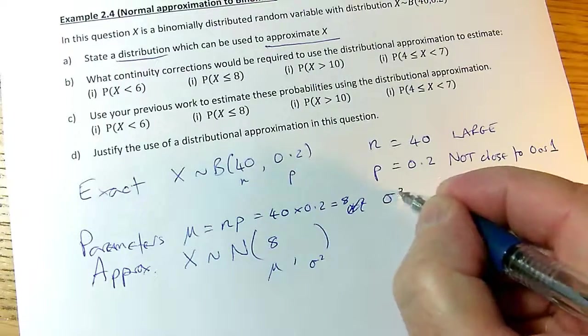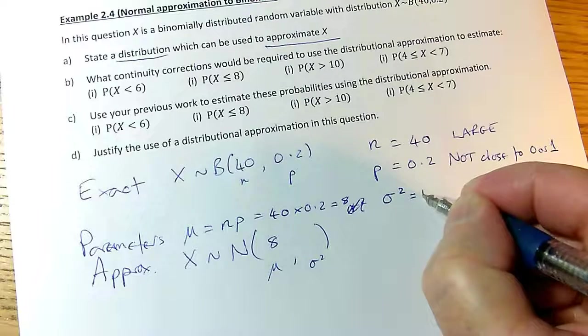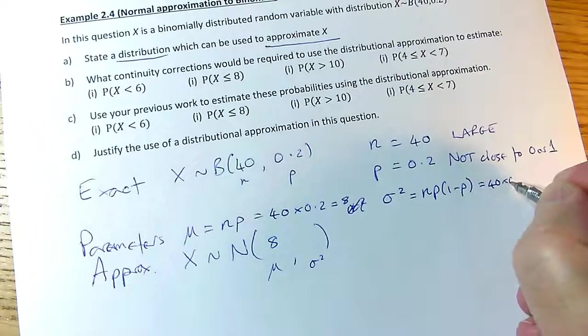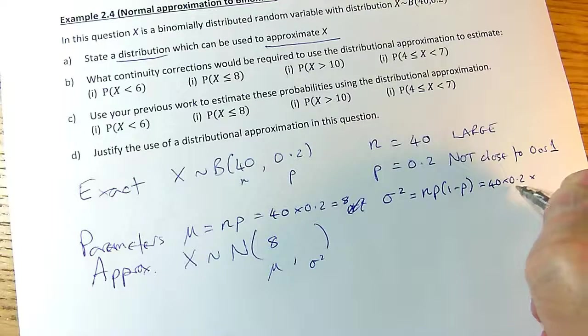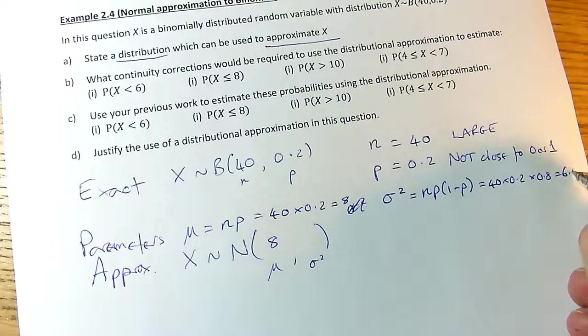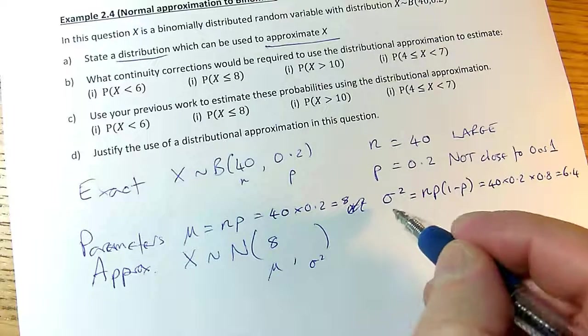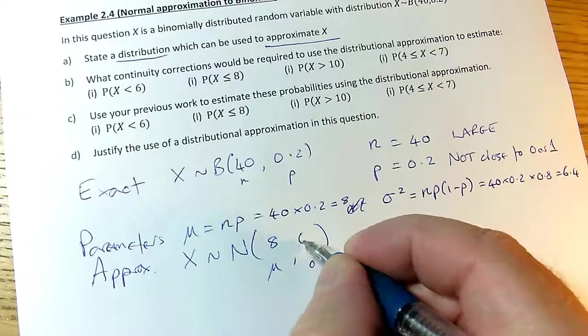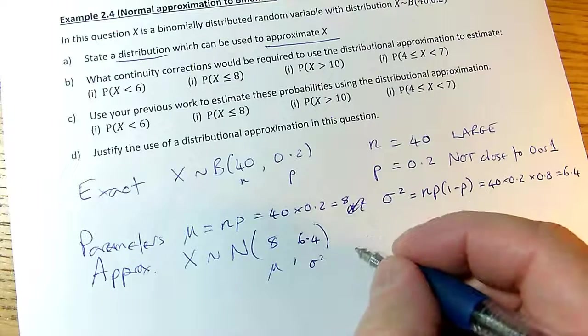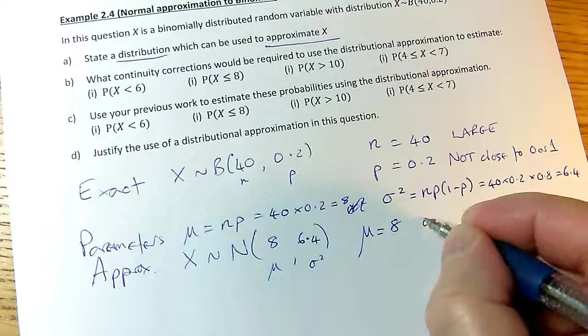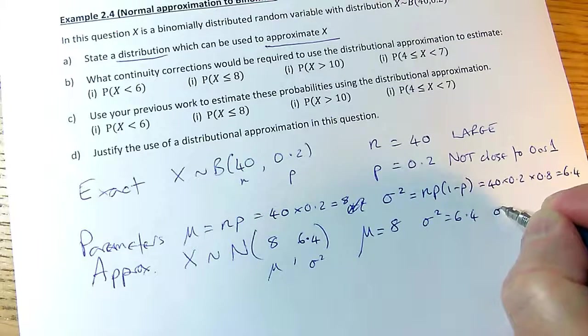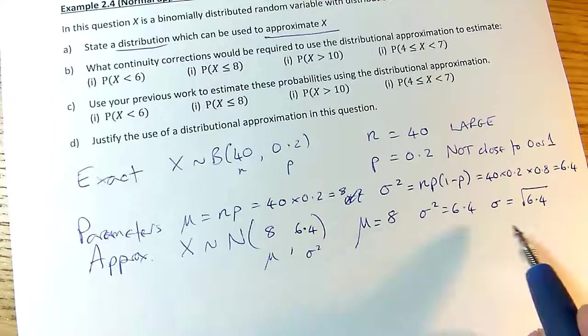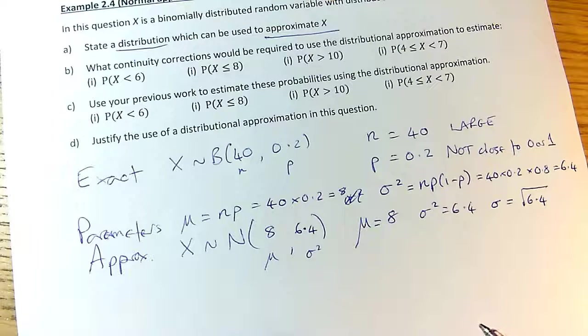For my binomial, the sigma squared, the variance is np(1 minus p). Which is going to be the 40 times the 0.2, that's n times p, and 1 minus p. 1 minus this p is 0.8. So I'm going to get 6.4. And it's really important I know that's the variance, not the standard deviation. Now, in this notation here, we do put the variance. We do put the 6.4 here. But it's always very good to be clear that mu is 8, sigma squared is 6.4, and I will be needing sigma later. Sigma is the square root of 6.4. So always get your sigma and your sigma squared set up so that you don't make a mistake with your variance.